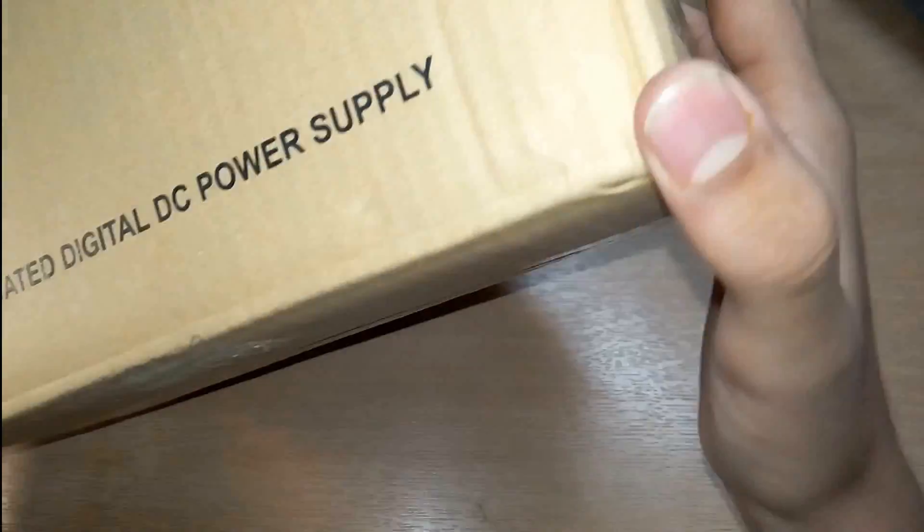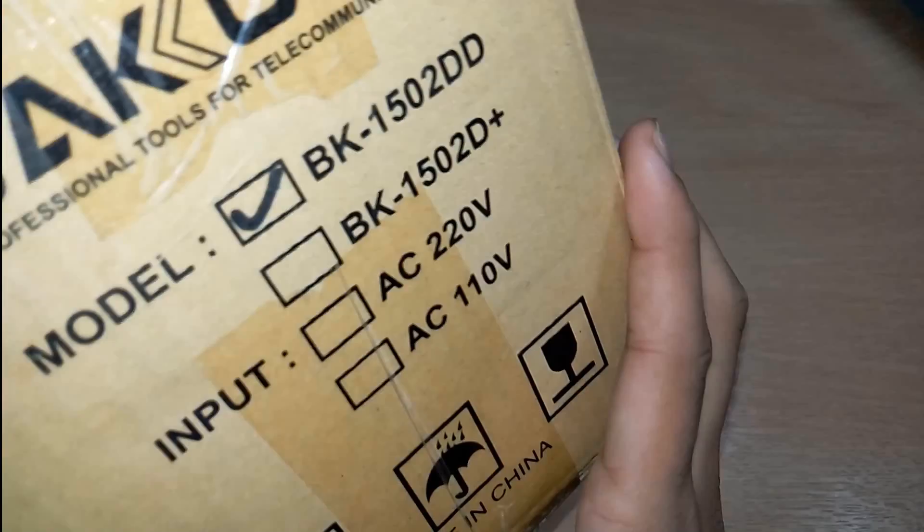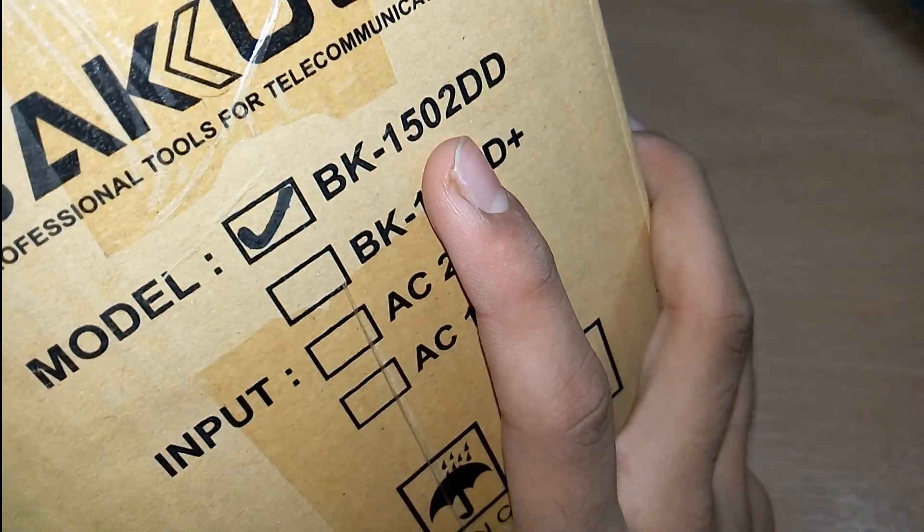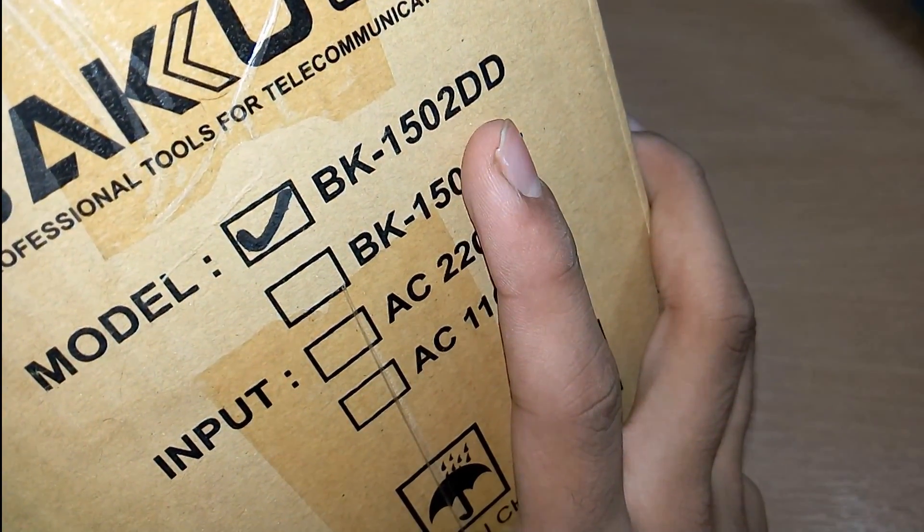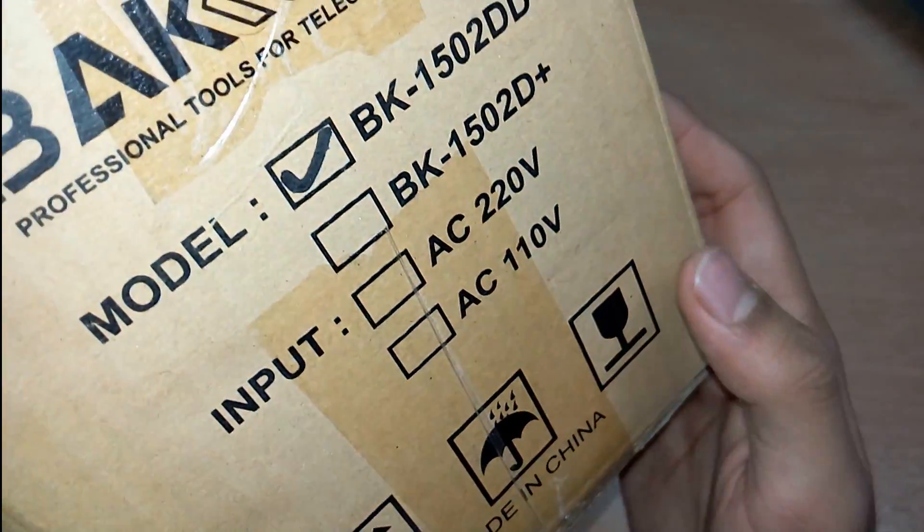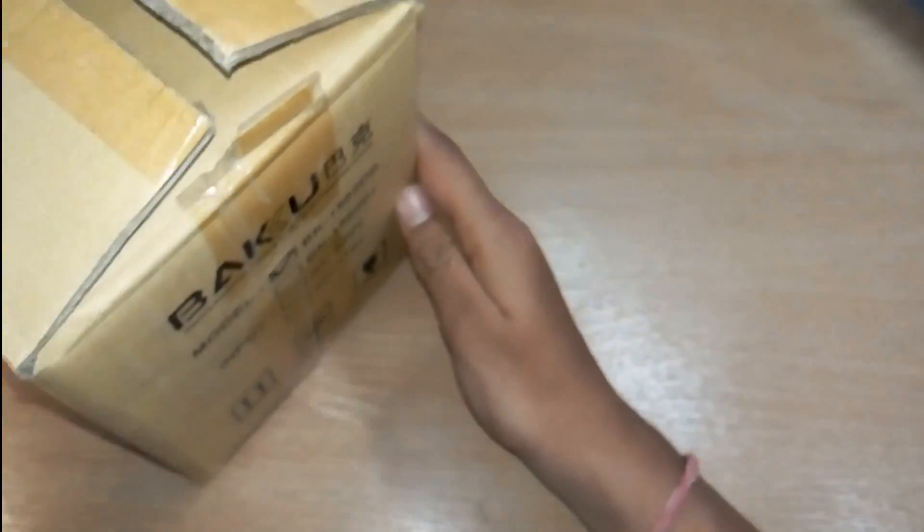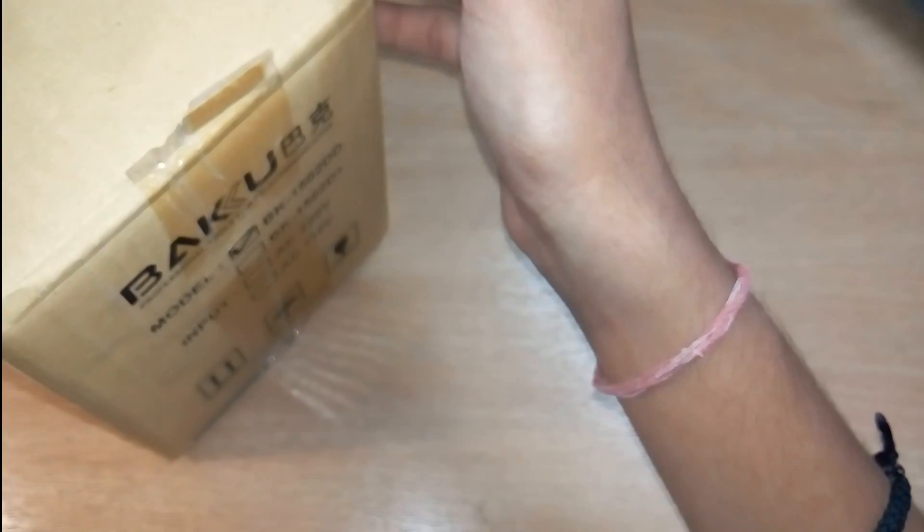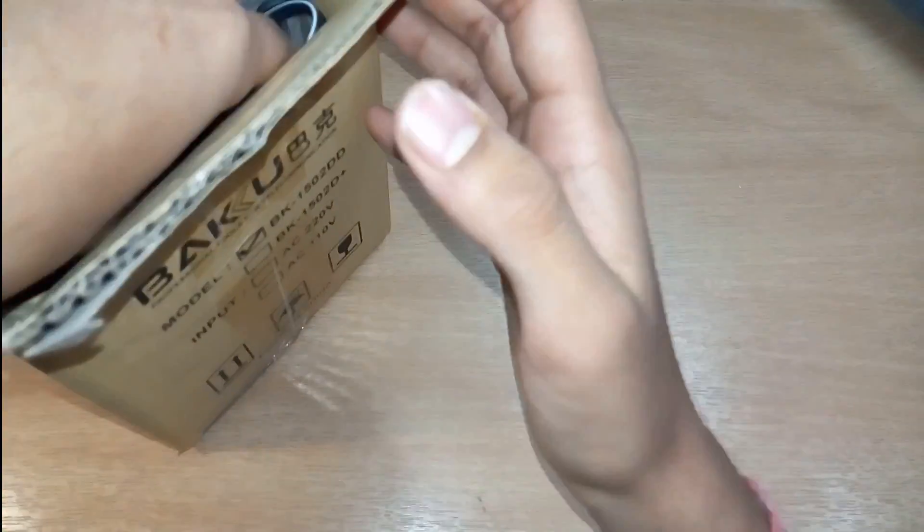We have here the model BK 152 double D. It's a made in China version, so let's have a look at what's in the packaging.